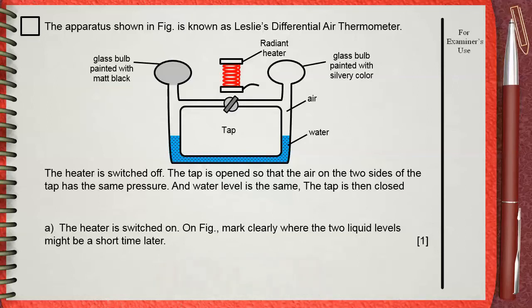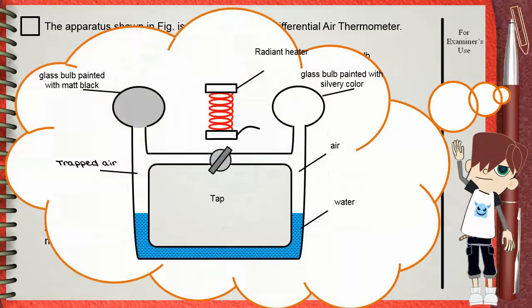Let's imagine to understand more. The heater produces heat radiation. The glass bulb painted with matte black color will absorb more heat than the glass bulb painted with silvery color. That's why the trapped air on the side of the matte black bulb will increase in temperature more than the trapped air on the side of the silvery colored bulb on the right. This hot air will expand, pushing the water surface downwards.